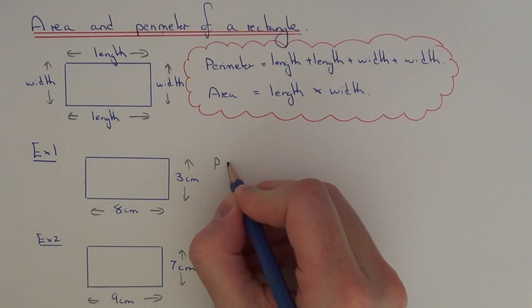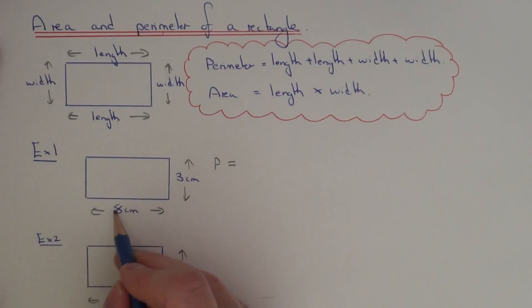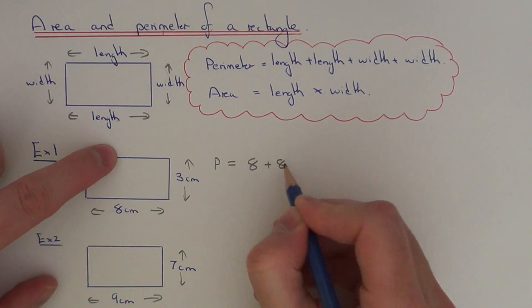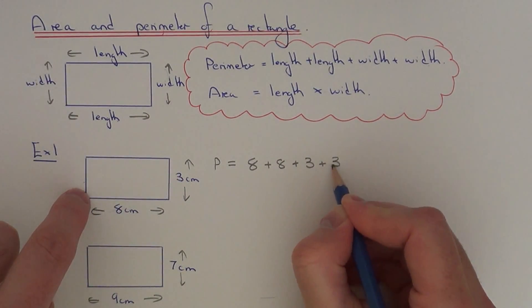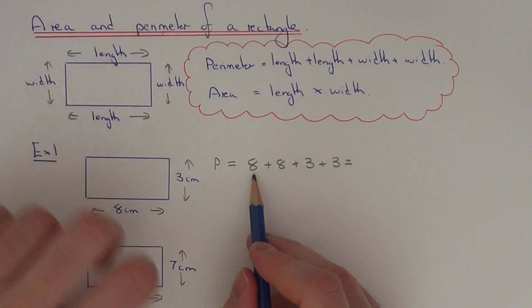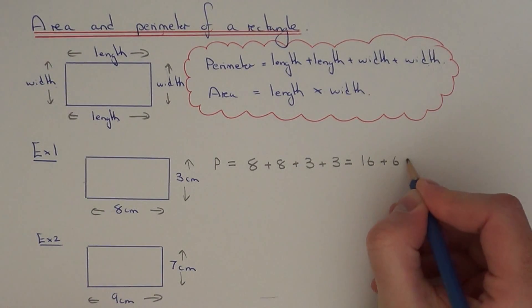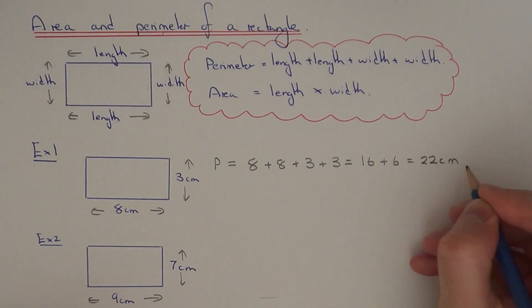So let's start with the perimeter. We just need to add up all the four sides, so if we do the length plus the other length plus the two widths, this will give us eight add eight is sixteen, three add three is six, sixteen add six is twenty-two centimetres.